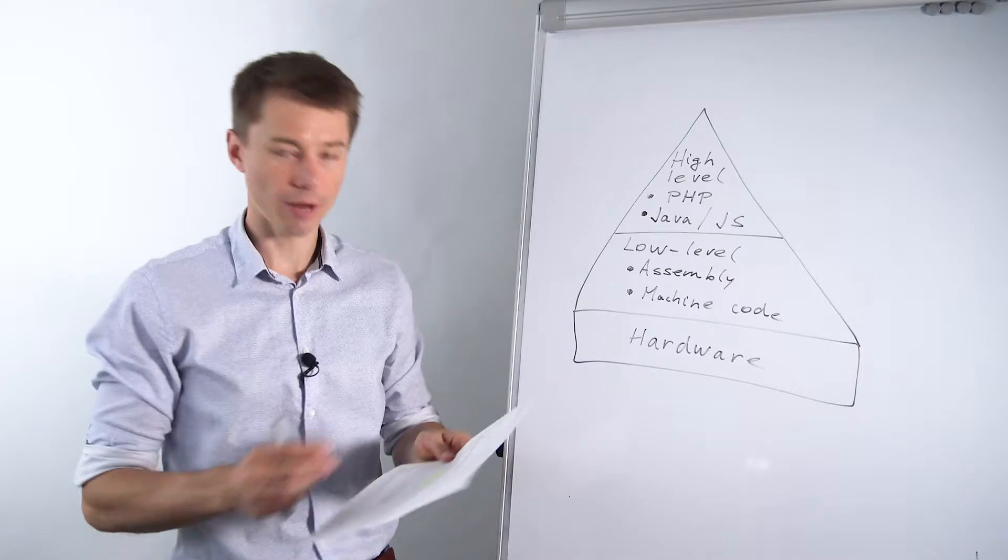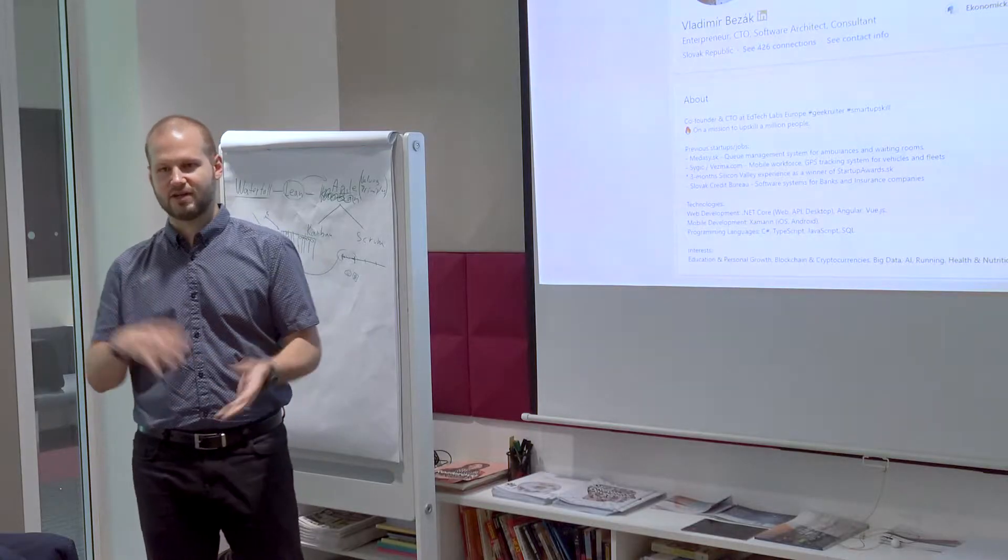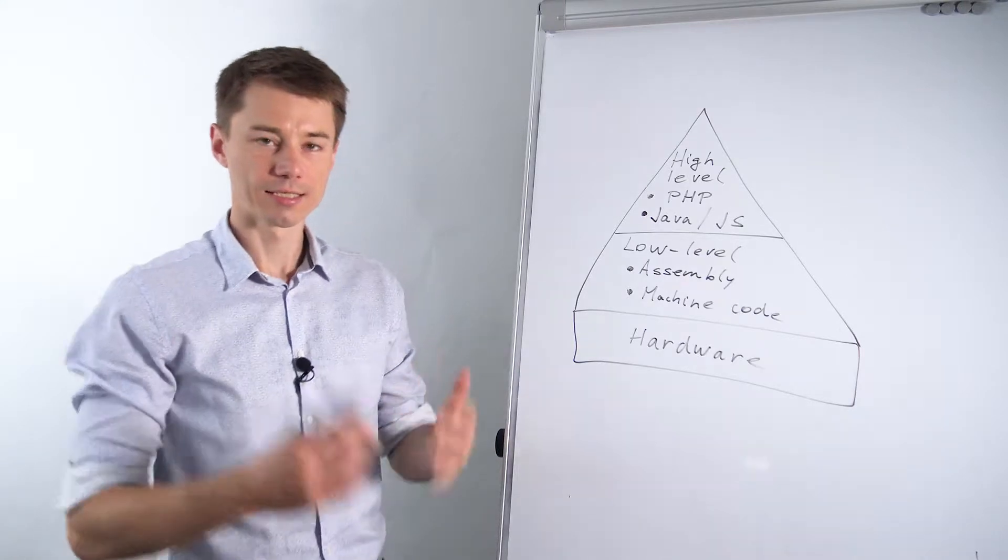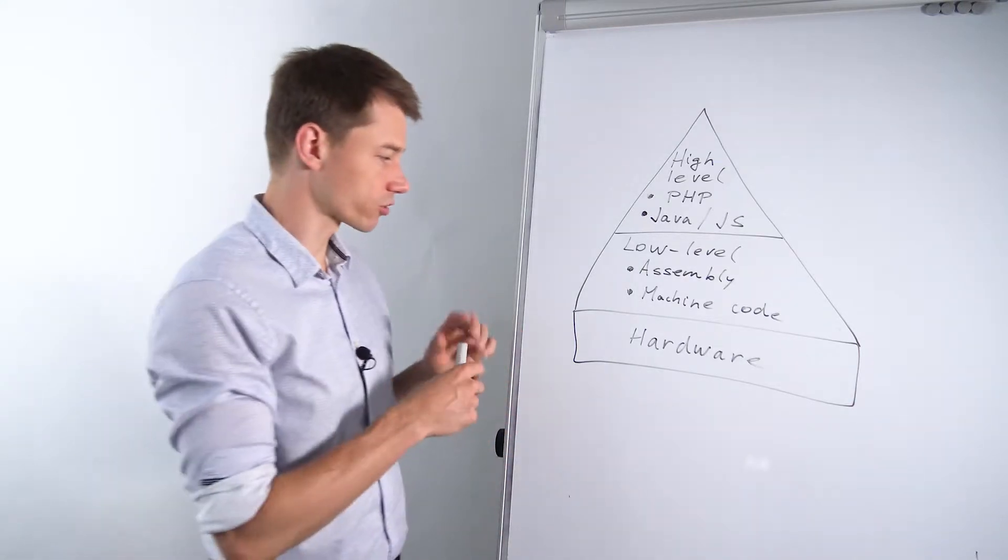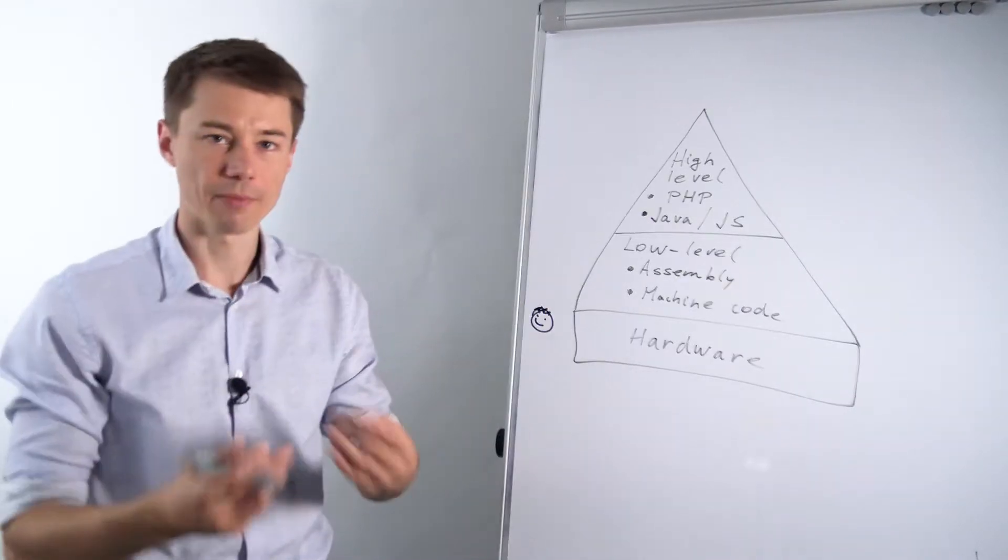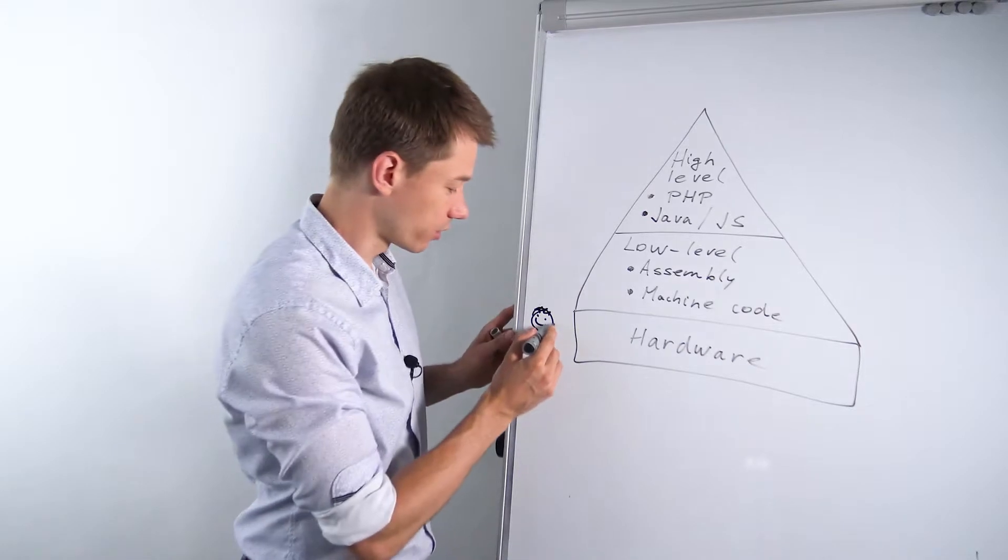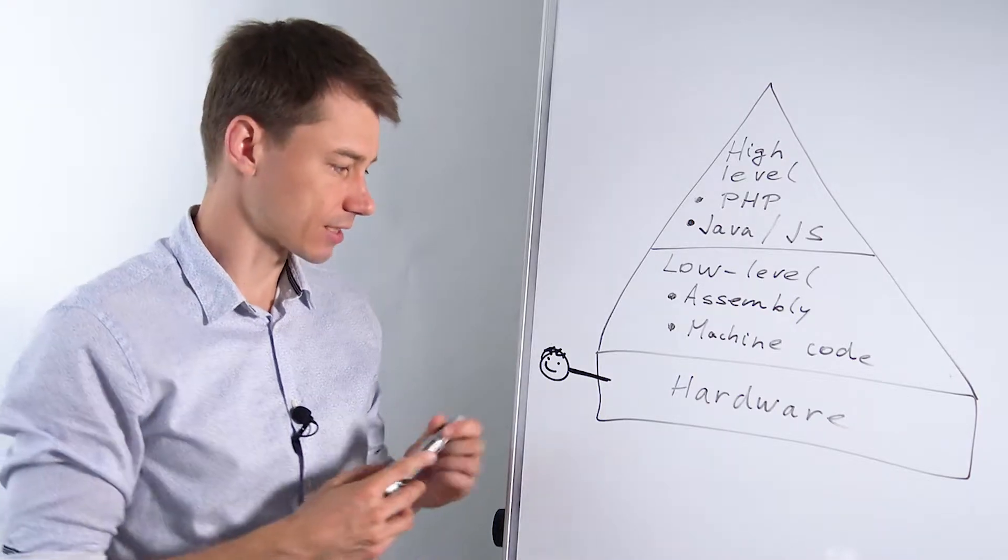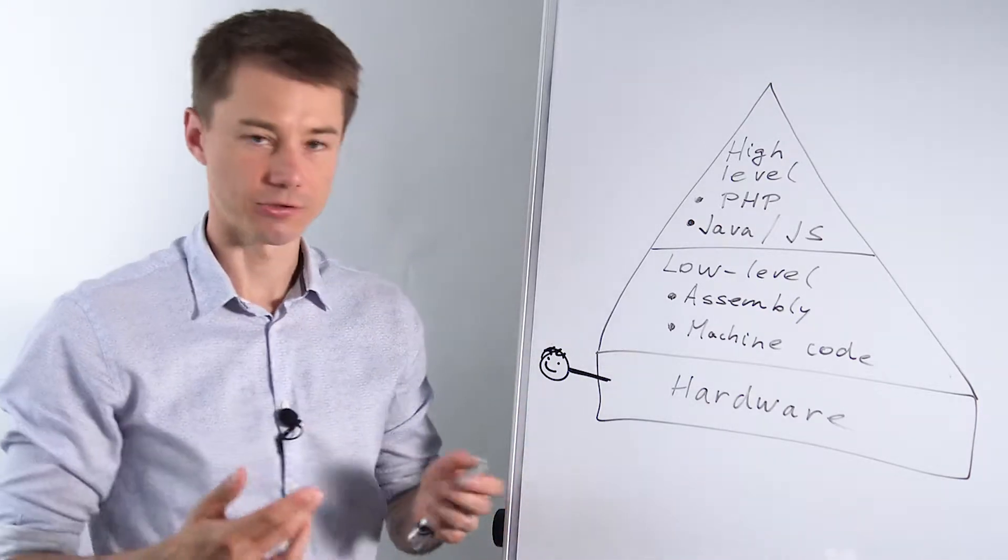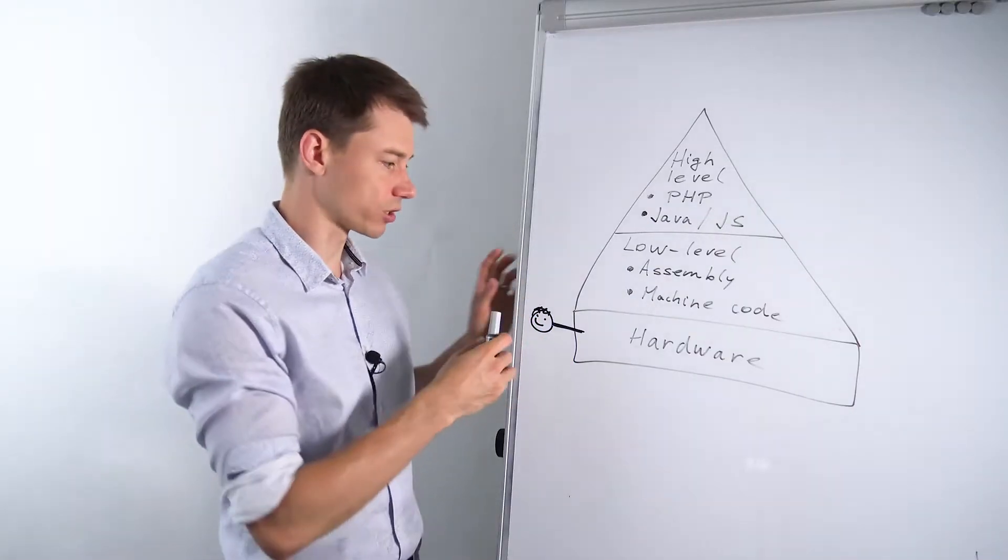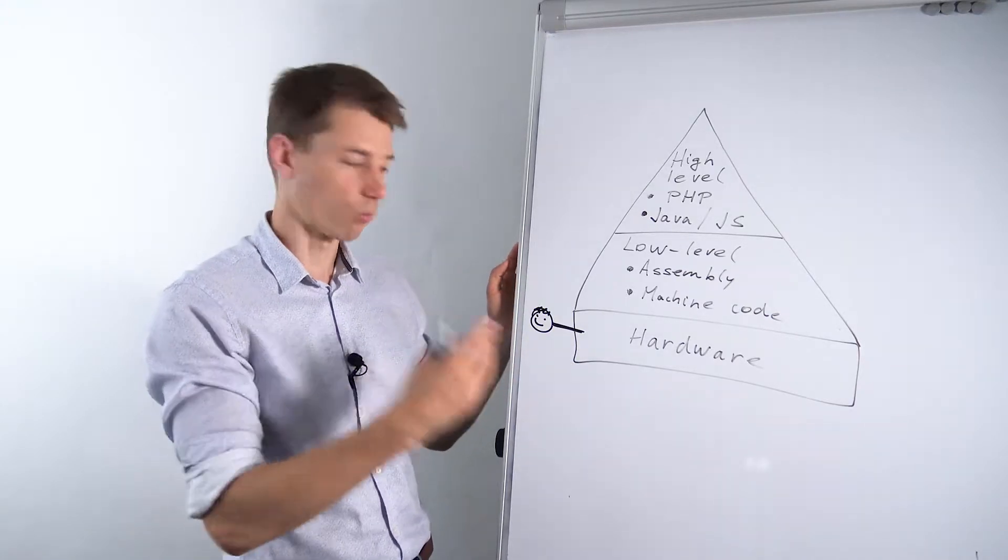The key term here is programming language. Programming languages provide sets of instructions from a developer. So here is a developer. He wants to perform some action with hardware but he cannot really access hardware on a computer. He cannot access memory or printer in some straightforward way. He needs to use some sort of programming language. He needs to give these instructions in some way.